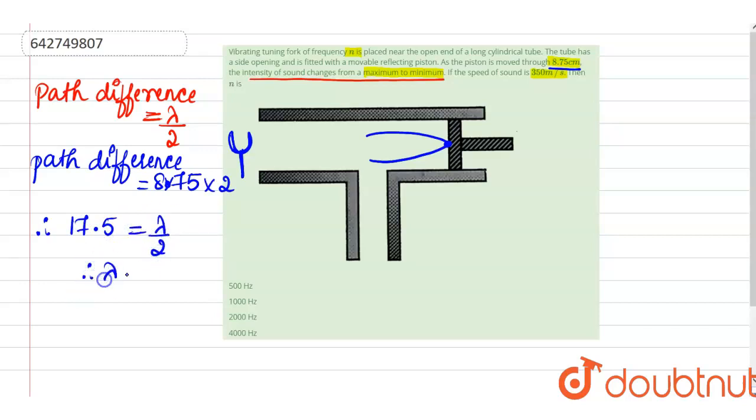Therefore, I will be getting lambda is equal to 35 cm because 8.75 is in cm or in terms of your meter, this is going to be 3.5, 0.35 meter.